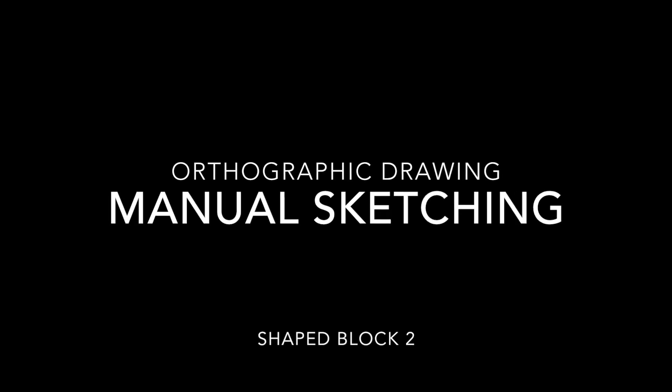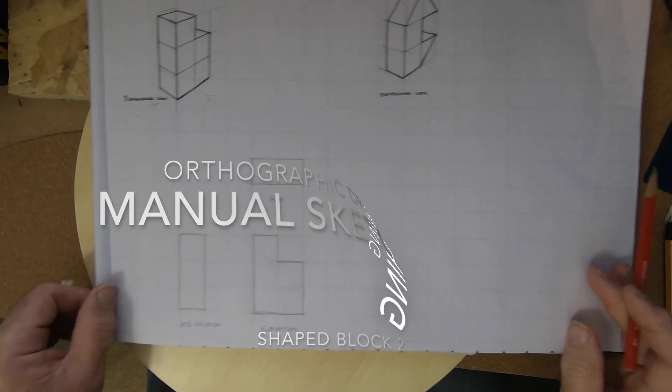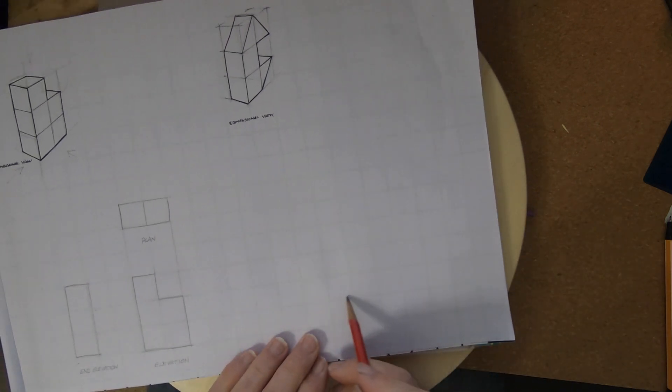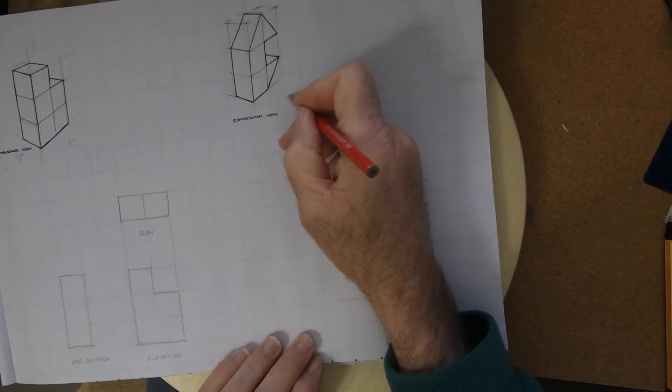Hello and welcome back to Orthographic Drawing. This is manual sketching, looking at shaped block number two. We're going to use that gridded sheet paper behind, roughly 20 millimeter squares.